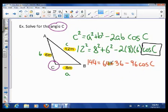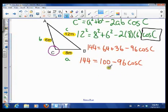So now we can add these numbers together. So 144 is 64 plus 36 is 100 minus 96 cos C. Now what people love to do is do 100 minus 96. We can't do that because these are not like terms. This one is just the number. This one is a number multiplied by cos C. They are not like terms. So to solve for cos C, what do you think we do next?